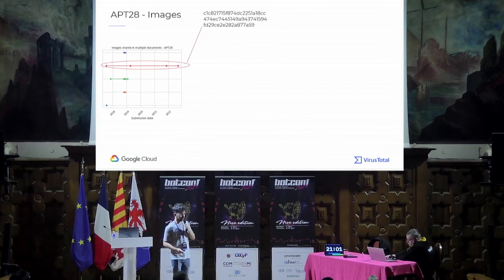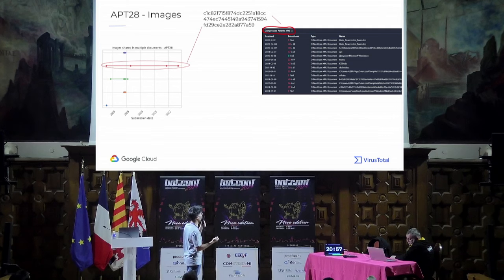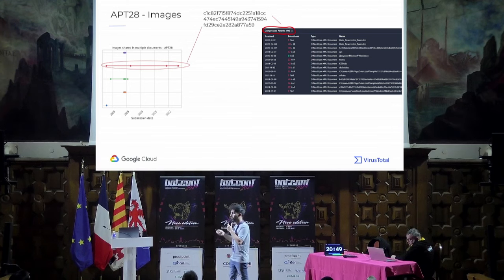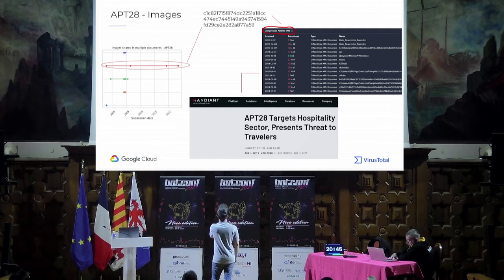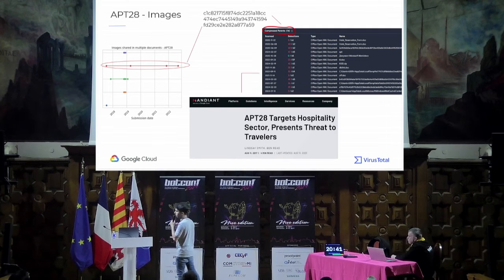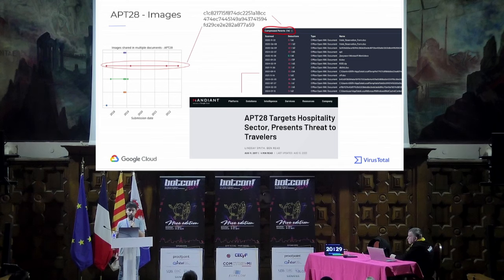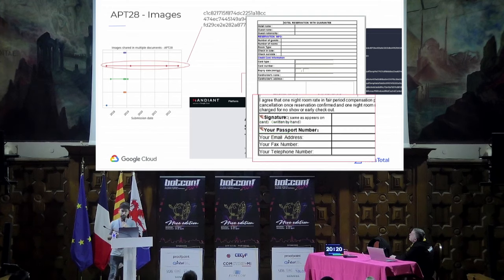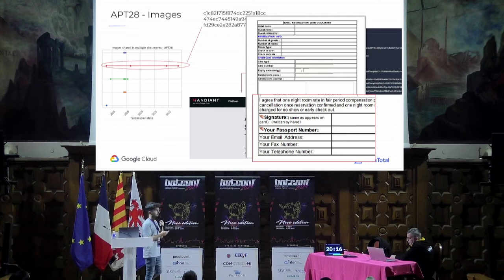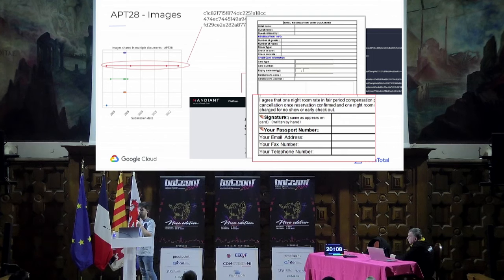Taking the insignificant hand image as an example: we can see it has 14 compression patterns — all 14 Word documents were using that specific image. All of them were related to a Mandiant report about APT28 targeting the hospitality sector. If we look at the specific Word documents distributed, they all looked similar with the image of the hand. Just having that image and creating some kind of livehunt in VirusTotal, you can track future new samples using that same image.